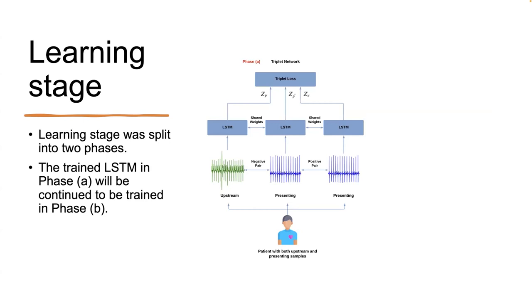In the learning stage, we utilize a Siamese neural network to employ metric learning. The Siamese neural network measures the distance between signal embeddings. In the first step of the learning stage, for patients with both upstream and presenting samples, we build triplets. As we can see from this figure, within one triplet, we have two different types of pairs: negative pairs and positive pairs. For the negative pair, it includes one upstream sample and one presenting sample. The Siamese neural network is trained to differentiate these two different types of signals.